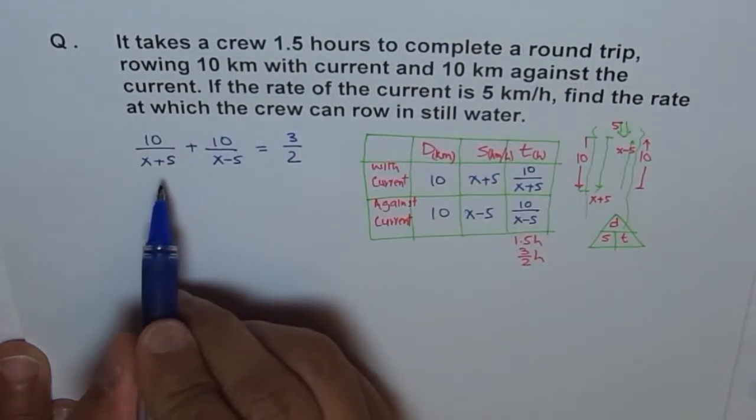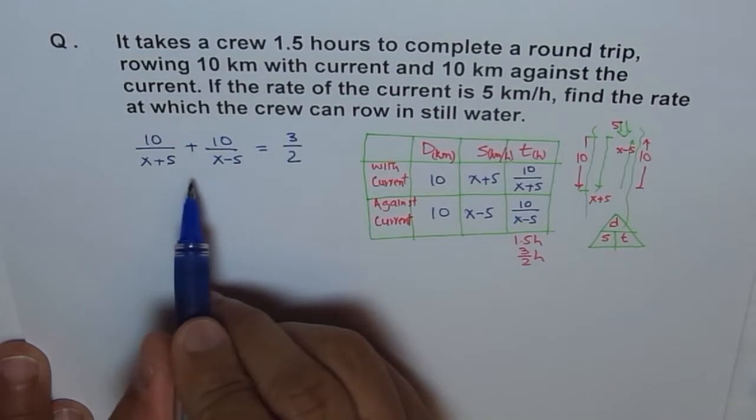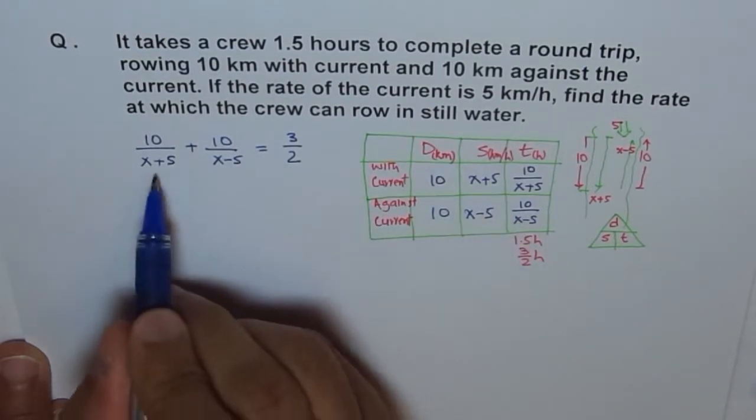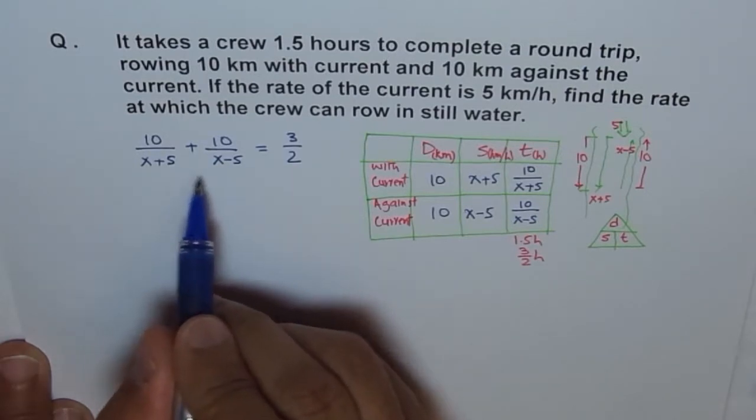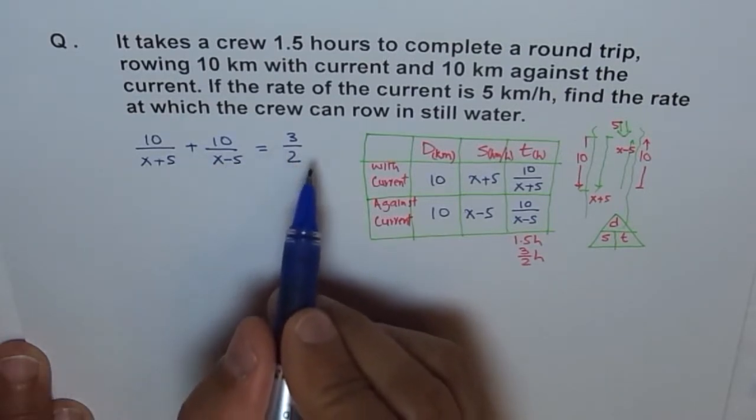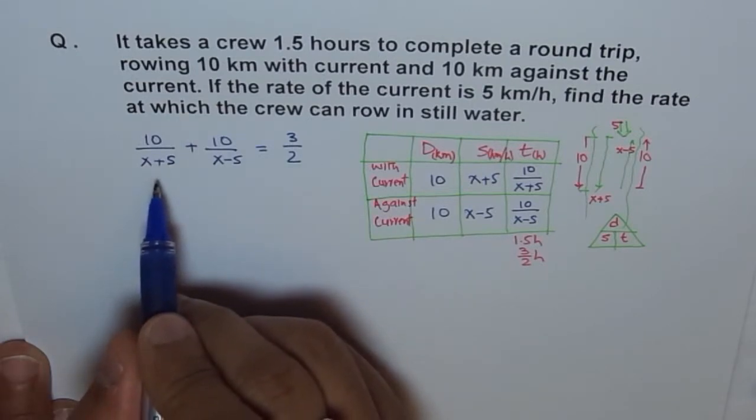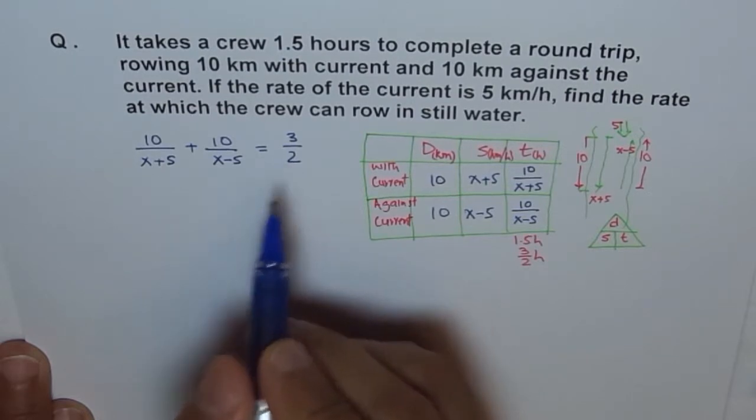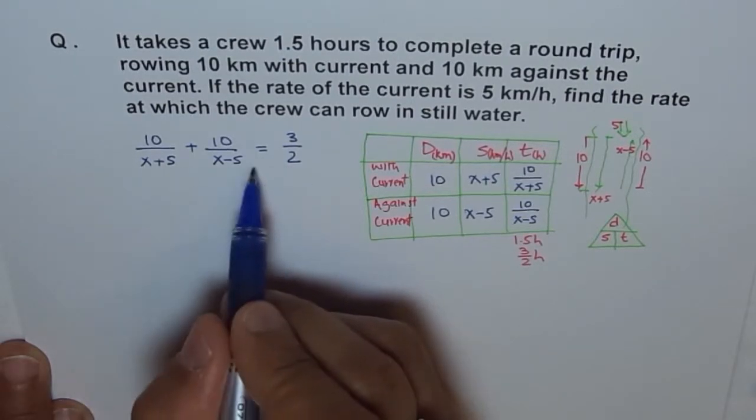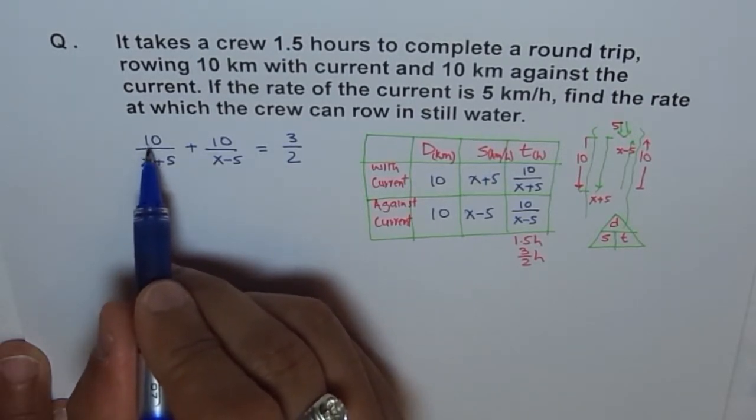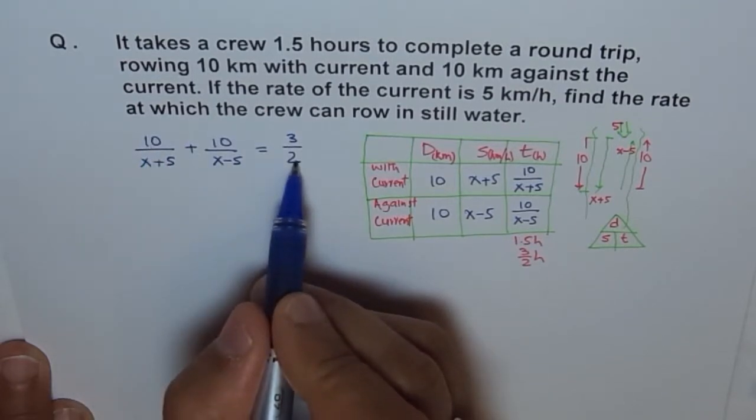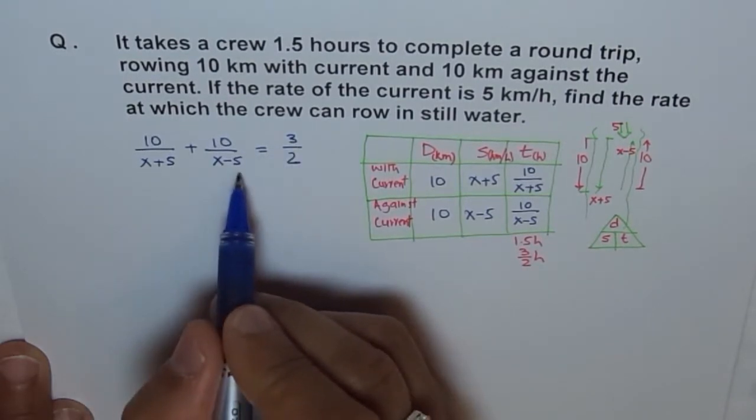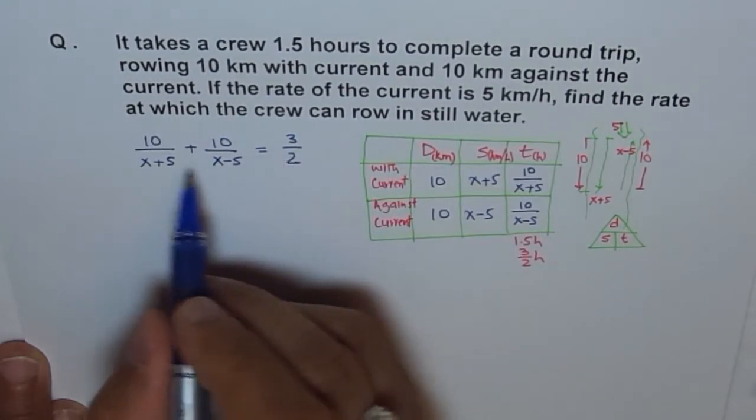Now, second step. In all the world problems and everywhere, when I do like this, first thing is get rid of fractions. Now, these denominators, we can find the common denominator. Multiply each by that. Now, the common denominator is X plus 5 times X minus 5 times 2. Correct? Now, when we multiply by this factor, effectively, we get 10 times these two terms. And here, 10 times these two terms. And here, 3 times these two terms.